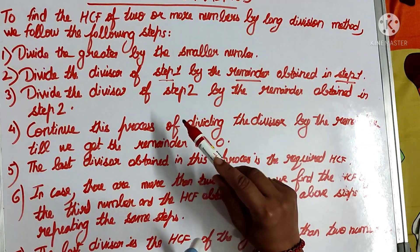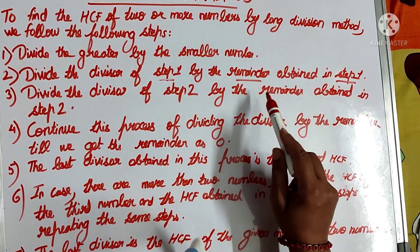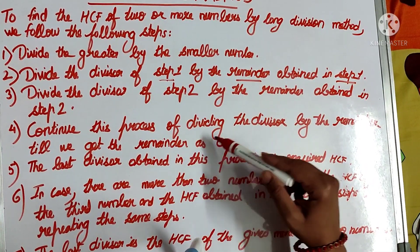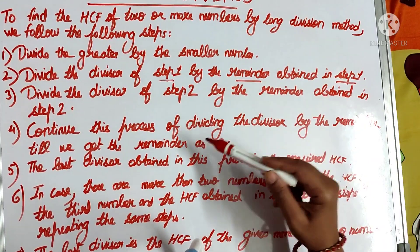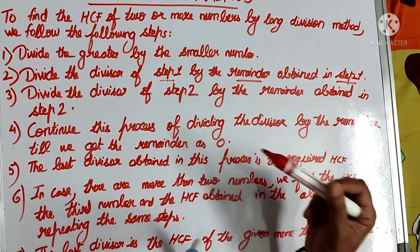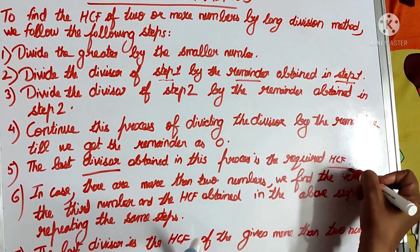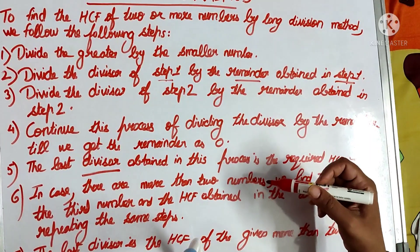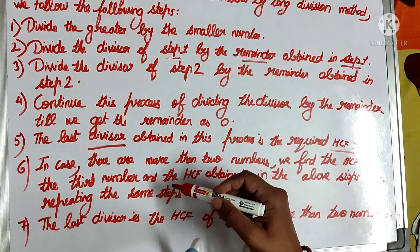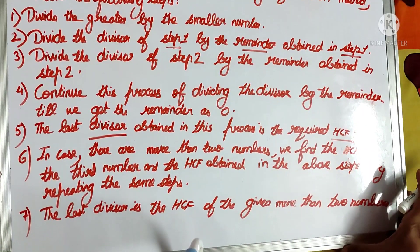Then divide the divisor of step 2 by the remainder obtained in step 2. Continue this process of dividing the divisor by the remainder till we get remainder as 0. The last divisor obtained in this process is the required HCF. In case there are more than 2 numbers, we find the HCF of the third number and the HCF obtained in the above steps by repeating the same steps.